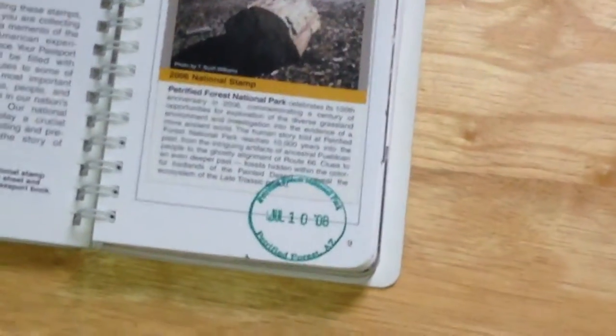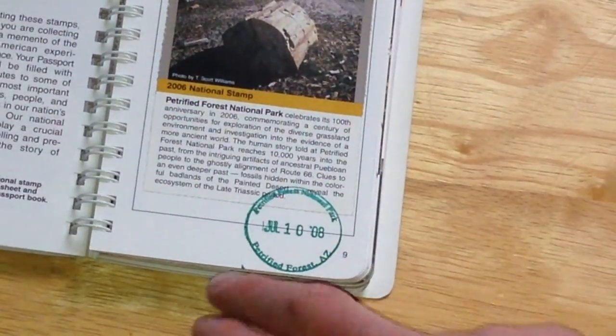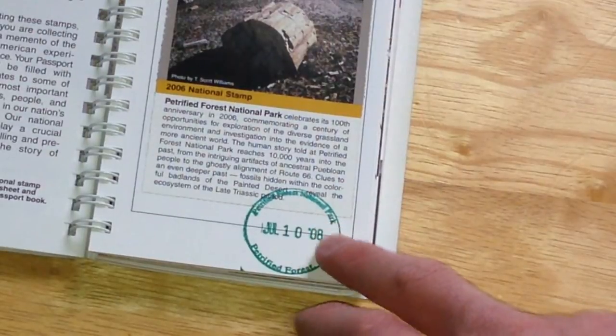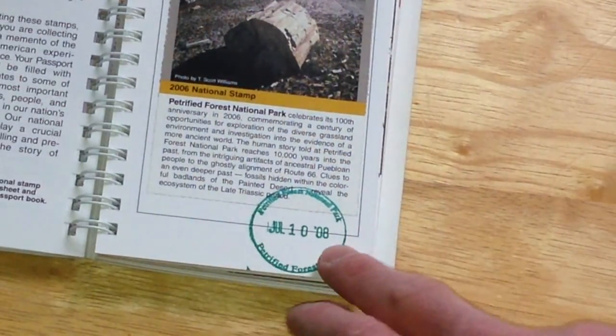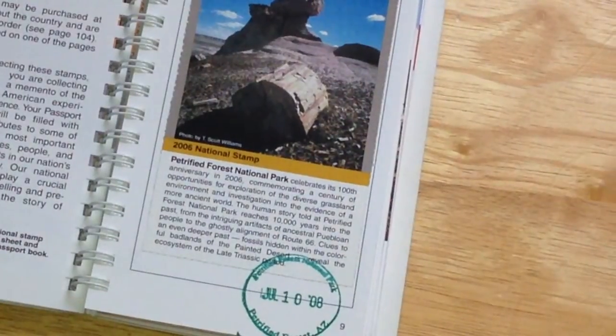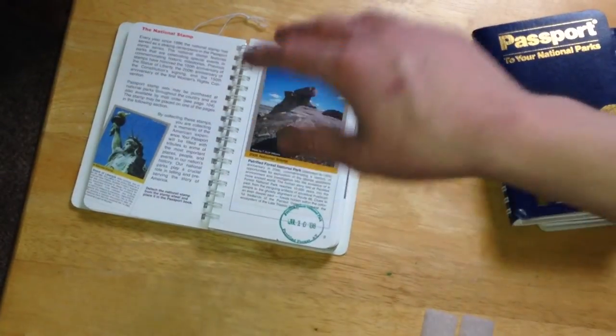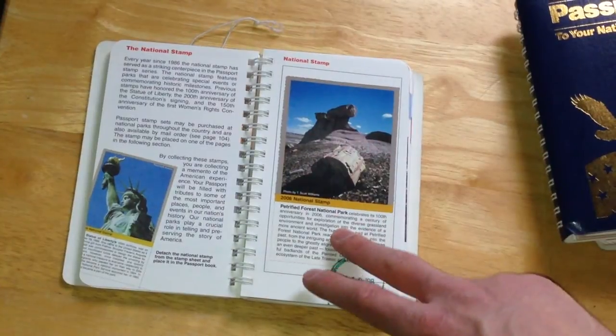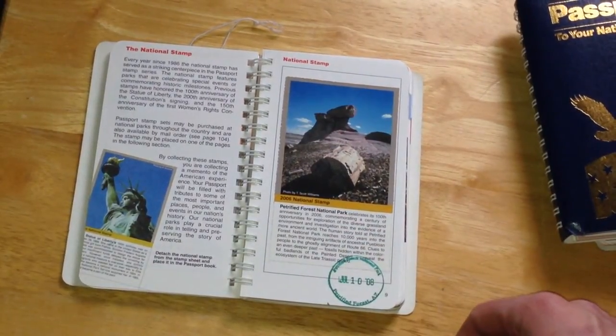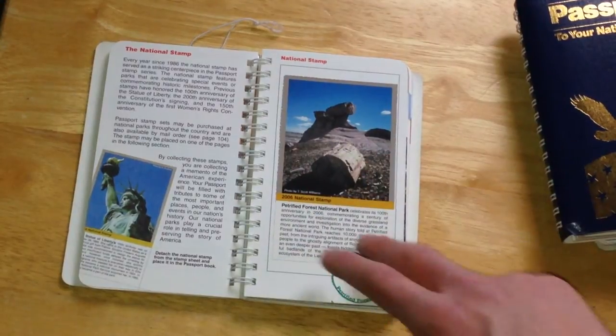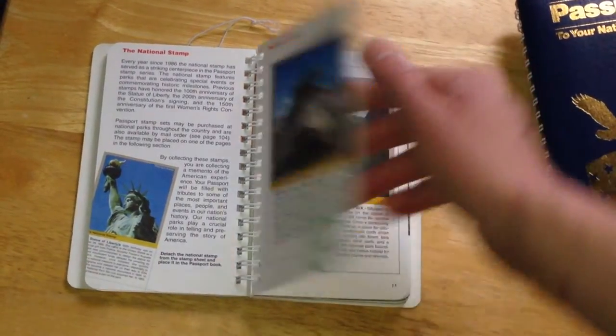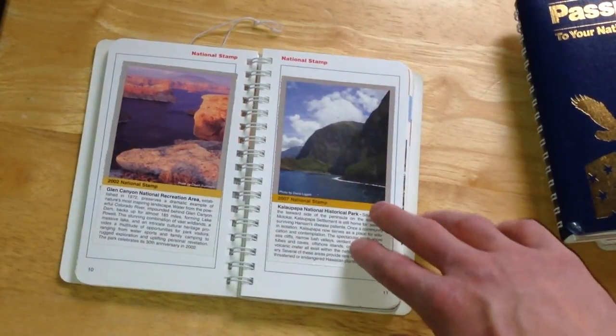So something you can see - this is an actual cancellation. It says Petrified National Forest up top, Petrified Forest Arizona. The date I went there was July 10th 2008. And then this is the national stamp that comes in the stamp packs, which is larger than the rest. Basically it's got a nice big picture right there, a little bit about the park. And then you can see I've got more of them.